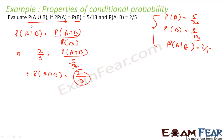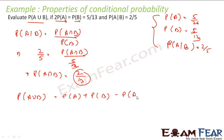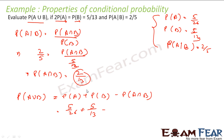Now I have to find probability of A union B. This is nothing but probability of A plus probability of B minus probability of A intersection B. Probability of A was 5 by 26, probability of B was 5 by 13, and probability of A intersection B is 2 by 13. If you solve this you get 11 by 26.